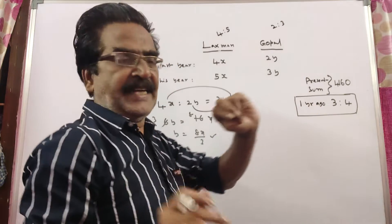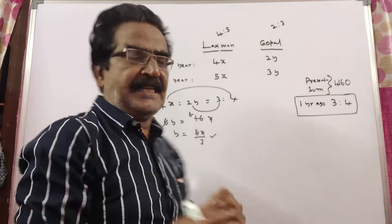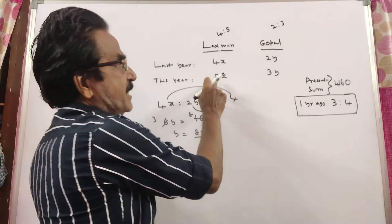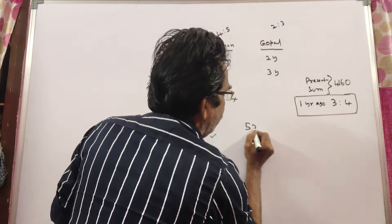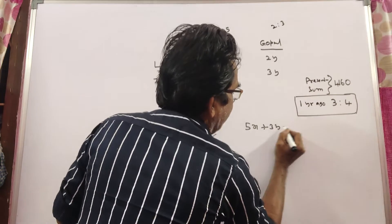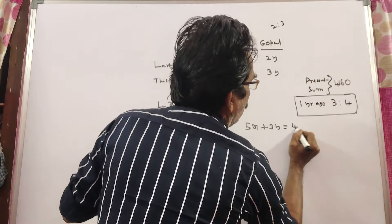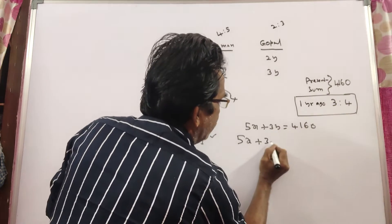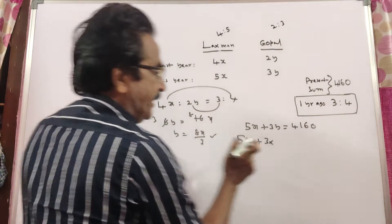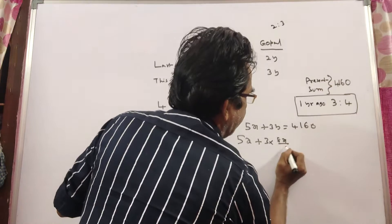And it is also given that sum of their present salaries. What are the present salaries? Lakshman's 5x, Gopal's 3y. That is 5x plus 3y is given. 5x plus 3y is equal to 4,160. 5x plus 3 into what is y? 8x by 3. y is equal to 8x by 3.